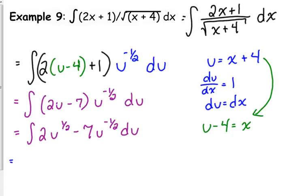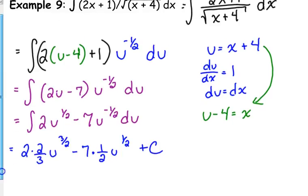We haven't anti-differentiated yet. So, when I do that, we've got 2 times 2 thirds u to the 3 halves, minus 7 times 1 half u to the 1 half, plus c.